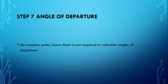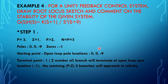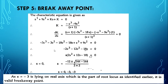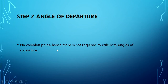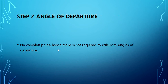Next step: angles of departure. In this given system, there are no complex poles — all three poles are real. When we have only real poles, it is not required to find angles of departure. So we proceed directly to plotting the complete root locus sketch.